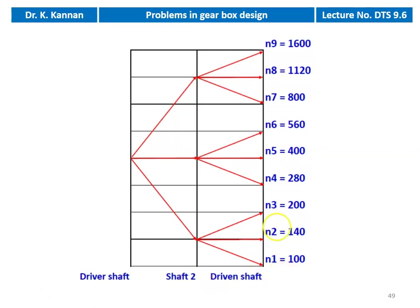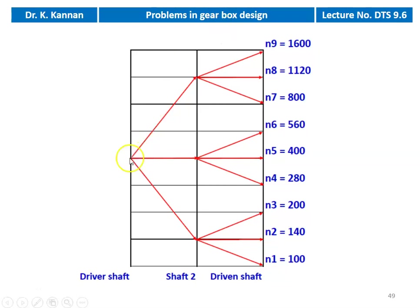The 9 speeds are 100, 140, 200, 280, 400, 560, 800, 1120, and 1600. The input shaft for the gearbox is running at 400 RPM. For every input speed there will be 3 output speeds at shaft 2, and for every input speed at shaft 2 there will be 3 output speeds at the driven shaft. With a 3×3 arrangement, there are 9 output speeds at the driven shaft.